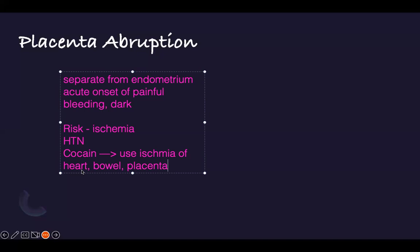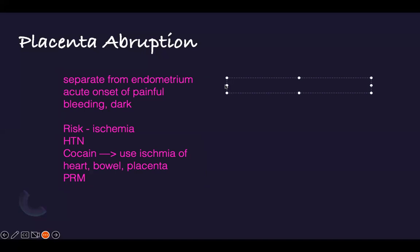Other risk factors include premature rupture of membranes, which can create ischemia. After they present with acute onset, the physical exam findings are: sudden onset, acute onset, painful dark bleeding. The abdomen will be very rigid — rigid abdomen or uterus, very painful. The baby, since it is becoming ischemic, will show changes on fetal monitoring — you see signs of fetal distress and abnormal fetal heart pattern.